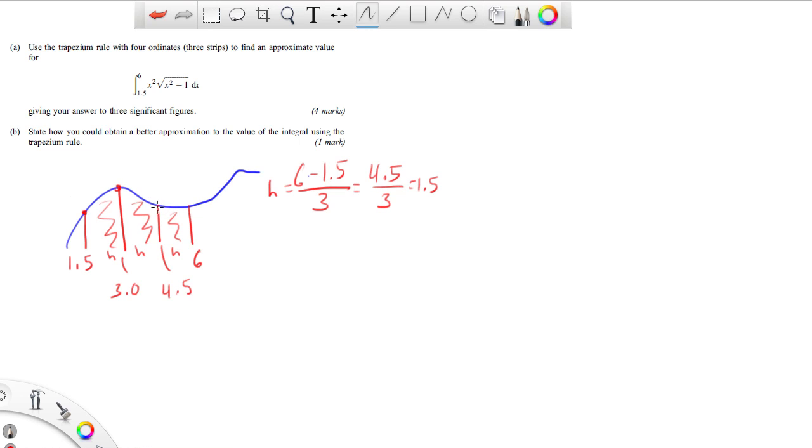If you think about this trapezium, I need to actually find out what these values are: the f of 1.5, the f of 3, the f of 4.5, and the f of 6. Once I know these points, I can make my little trapeziums, find the area all nice and neat. That's what the calculations are going to be doing.